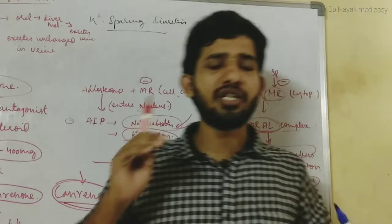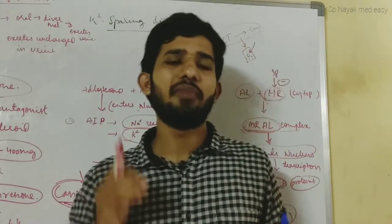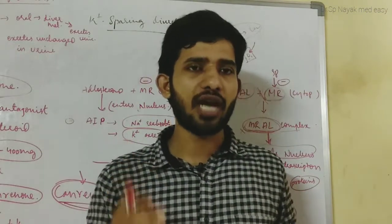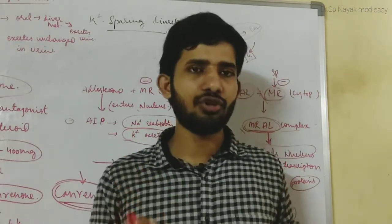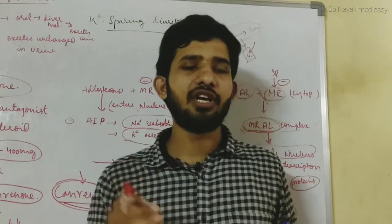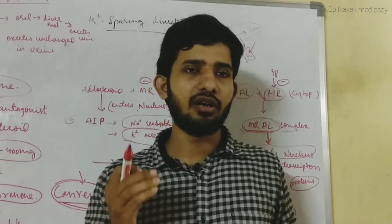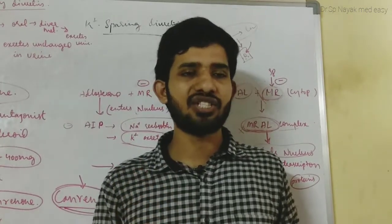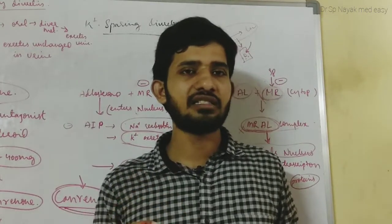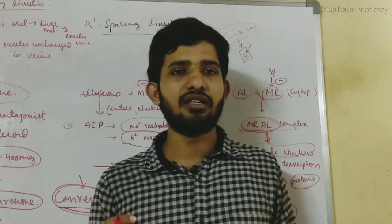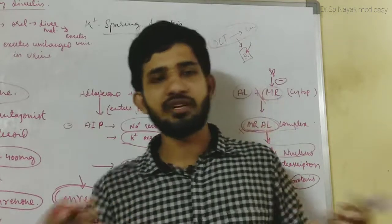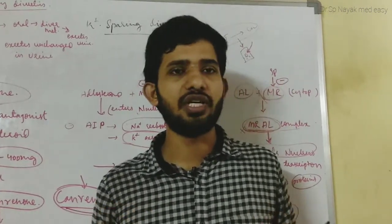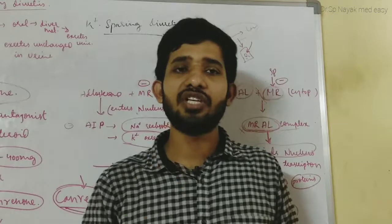This concludes the lecture on potassium-sparing diuretics. We have covered the mechanism of action of spironolactone, aldosterone's role, the pharmacokinetics, drug interactions, adverse drug reactions, and uses of spironolactone, as well as triamterene and amiloride.